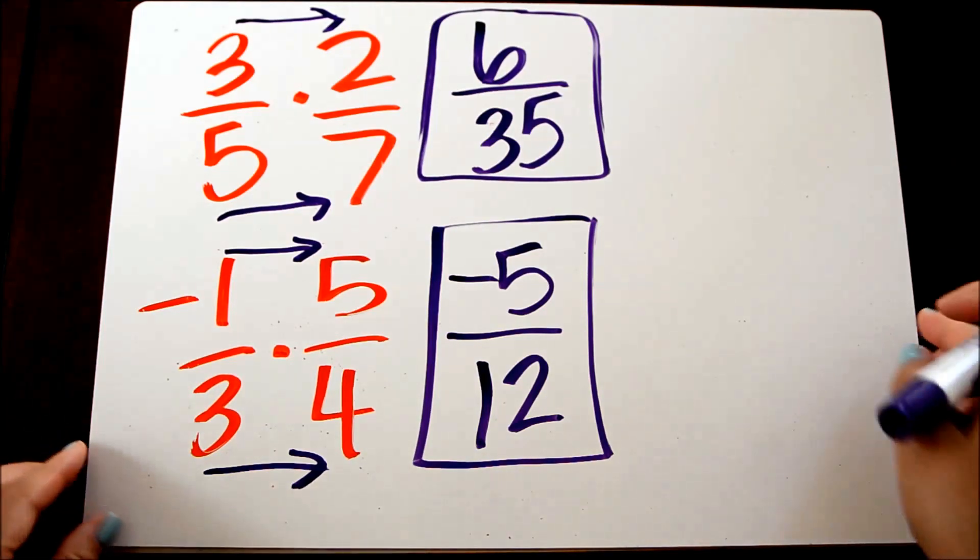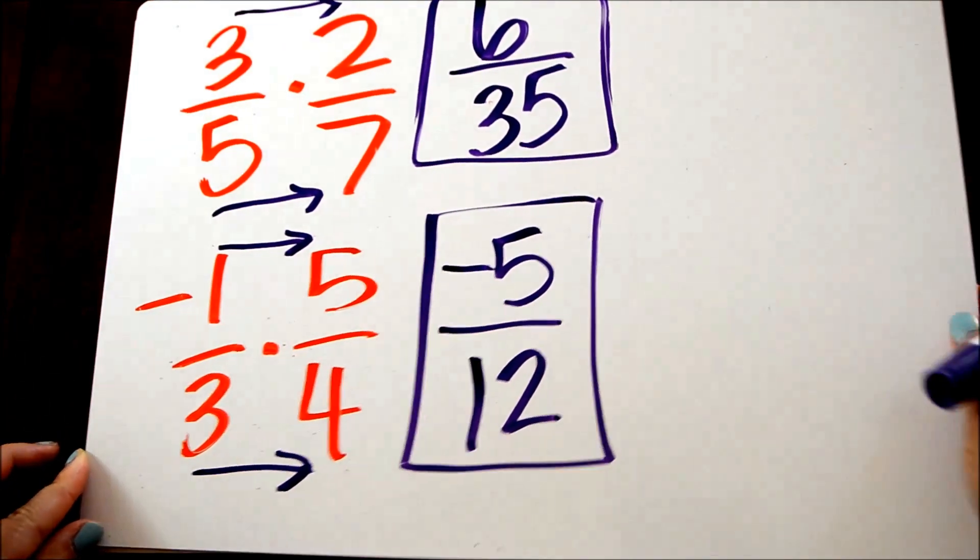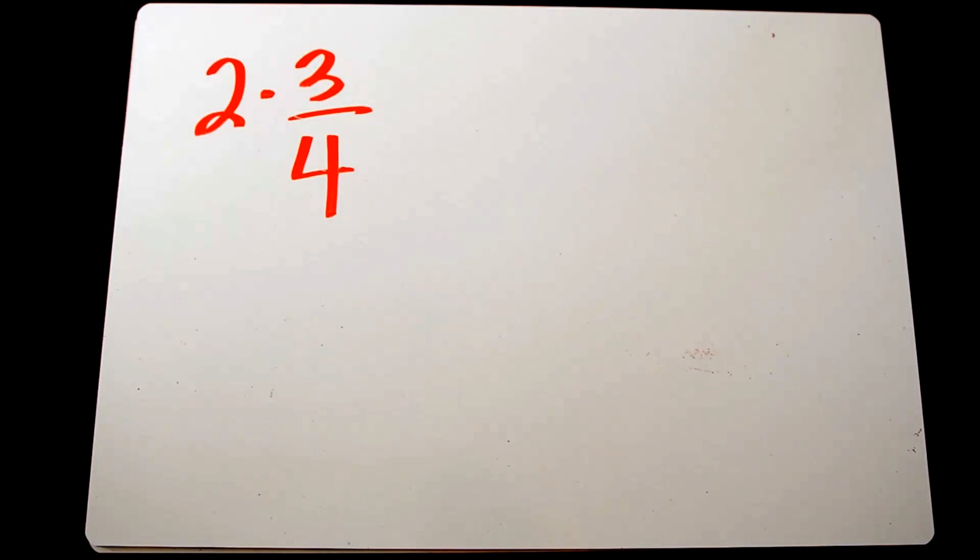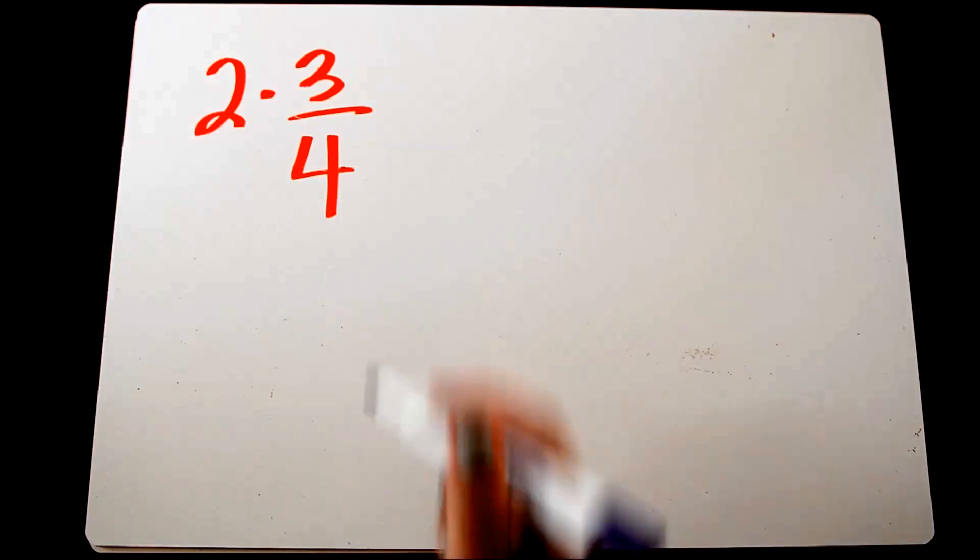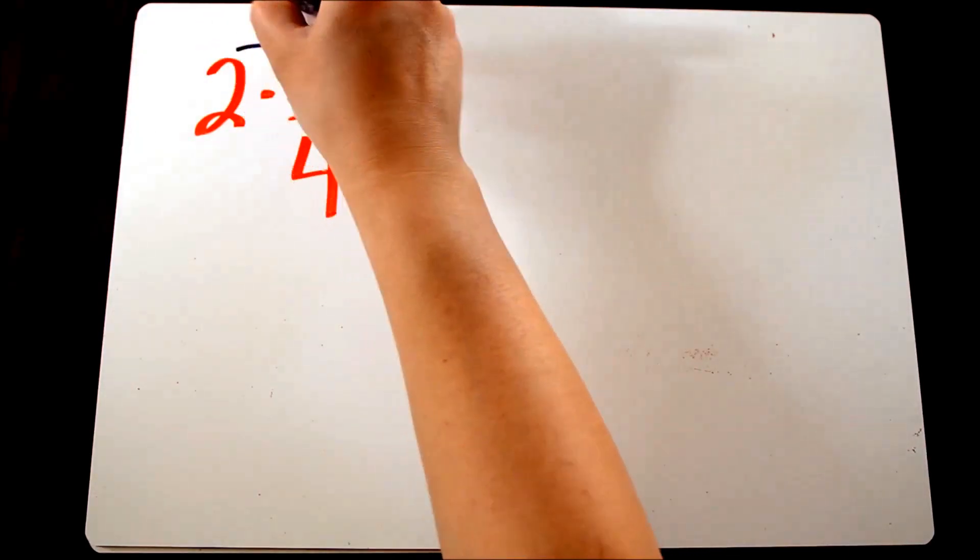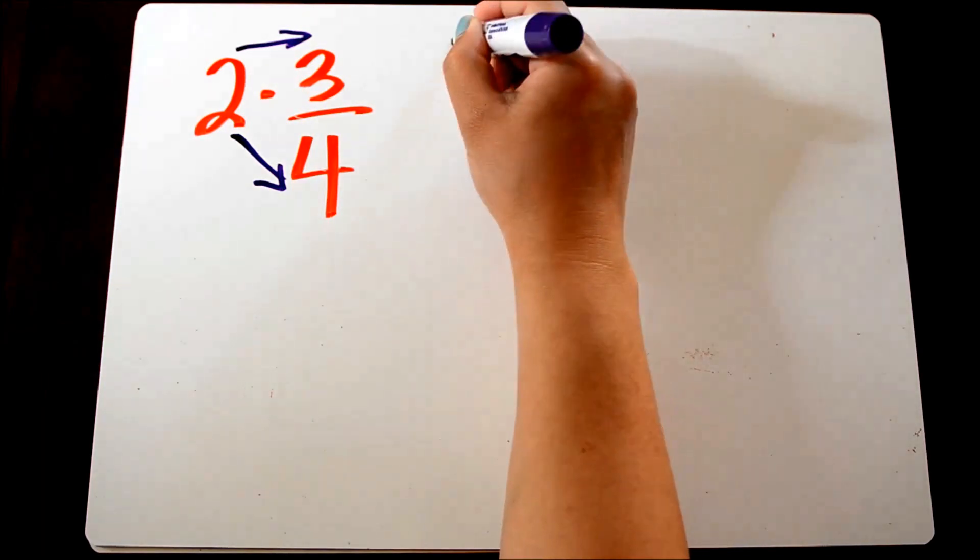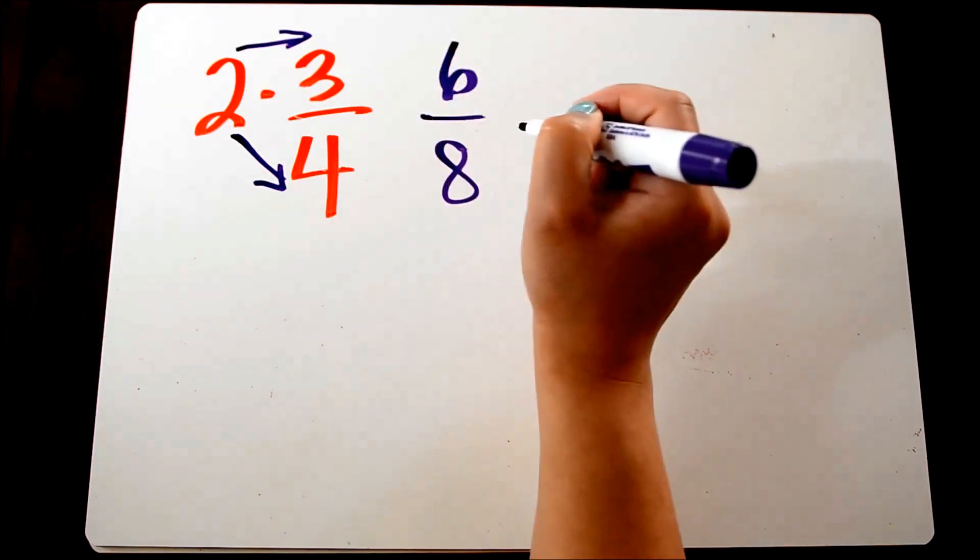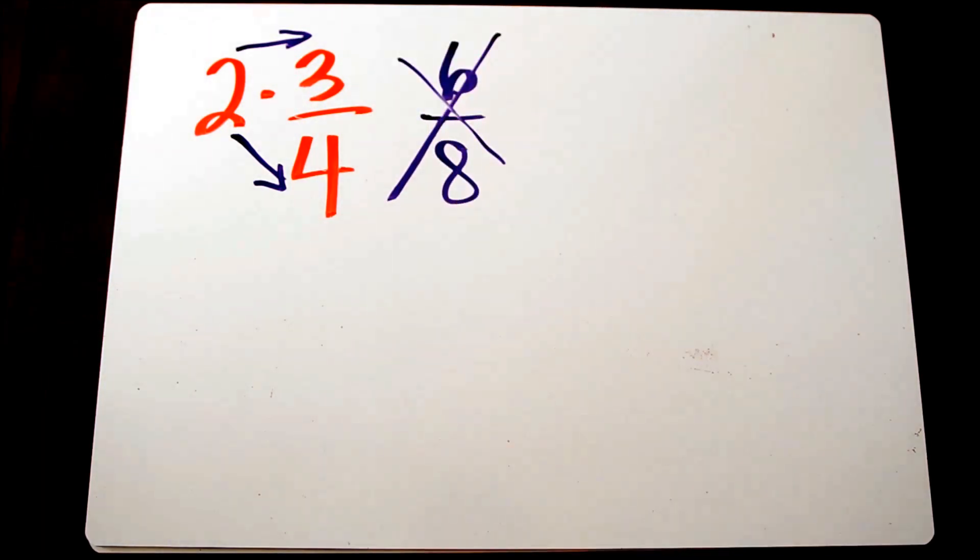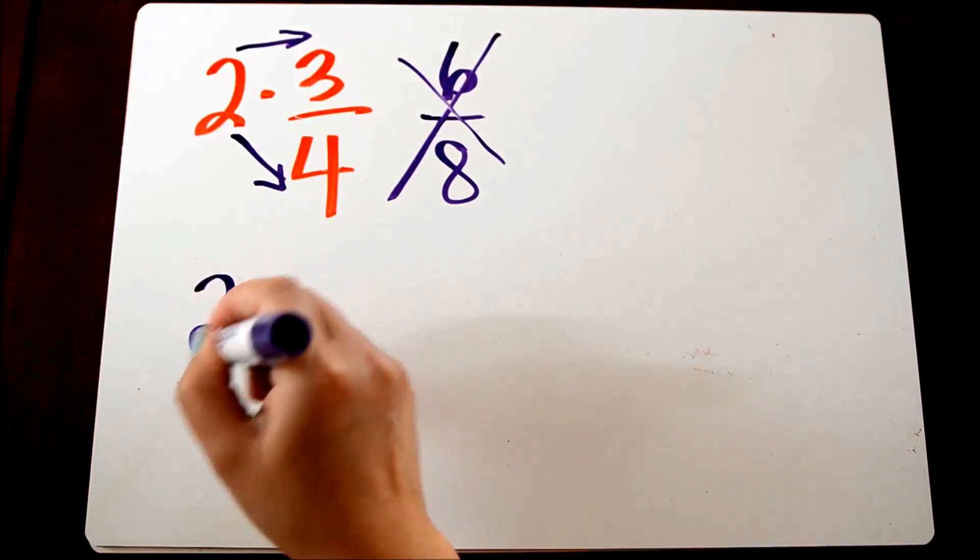Let's do one more example. A common misconception when students are multiplying integers with fractions is that they think they need to multiply that integer with the numerator and the denominator. So here they would get 6 over 8, but we know that's not really correct. 2, when it's written as a fraction, is actually 2 over 1.